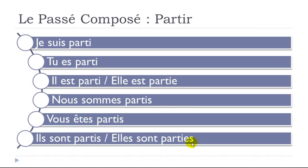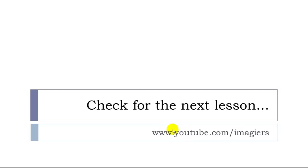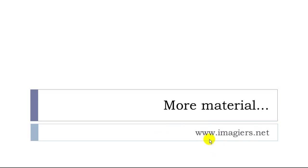As with venir, since partir uses être, you add 'e' for feminine singular (partie), 's' for plural (partis), and 'es' for feminine plural (parties). Phonetically: parti, parti, parti — you don't pronounce the extra letters. But write correctly: je suis parti, tu es parti, il est parti, elle est partie, nous sommes partis, vous êtes partis, ils sont partis.